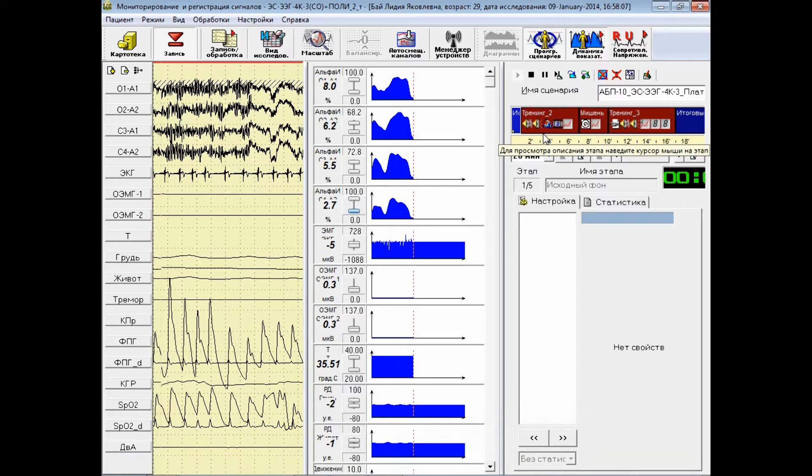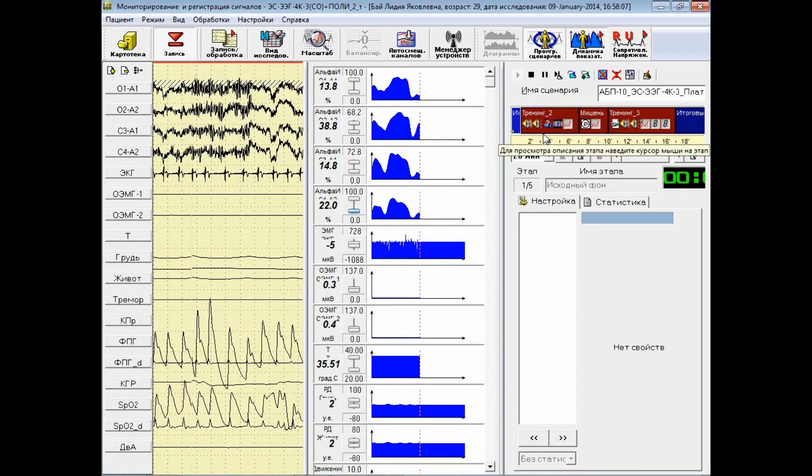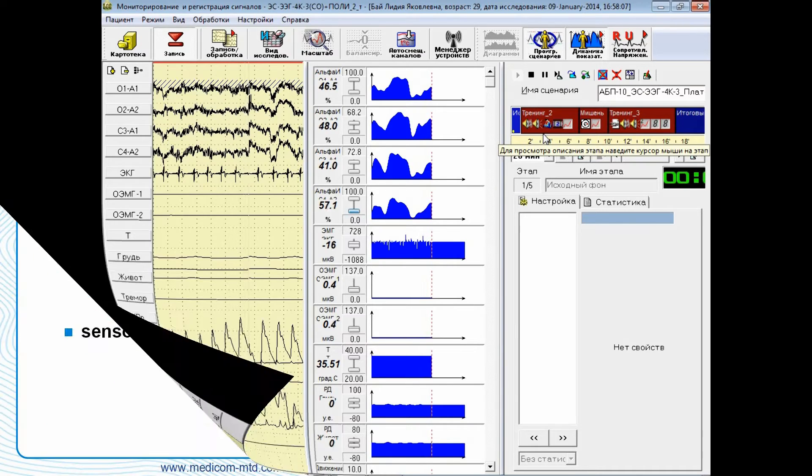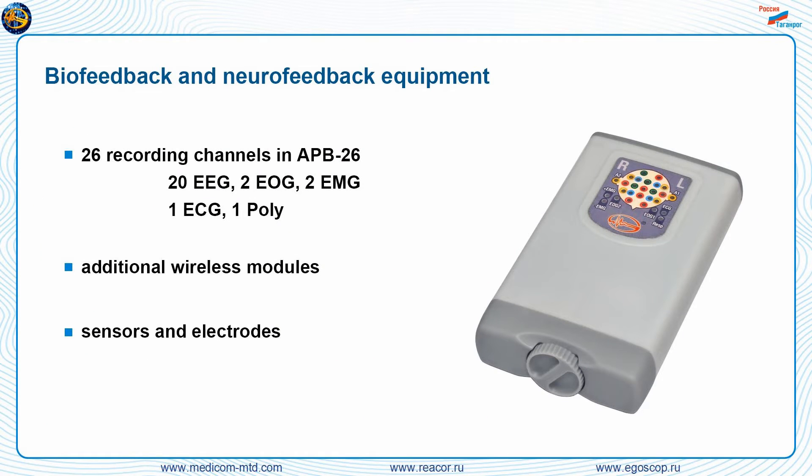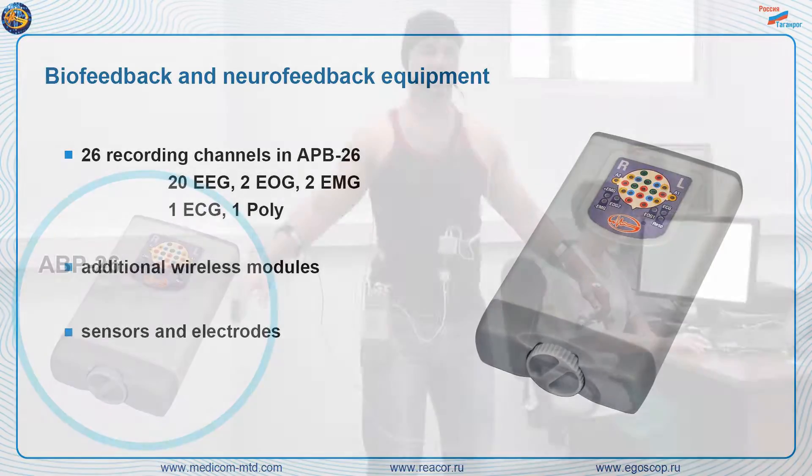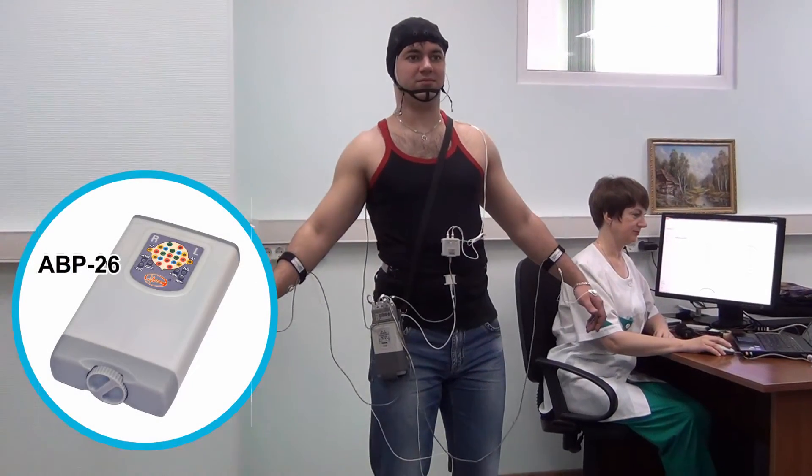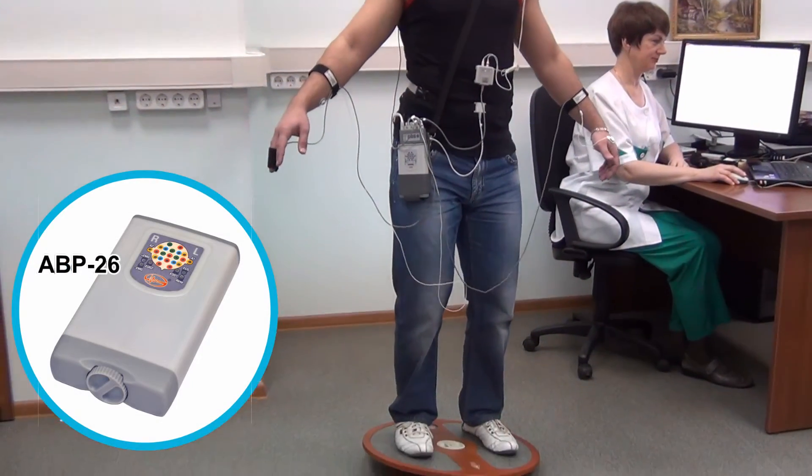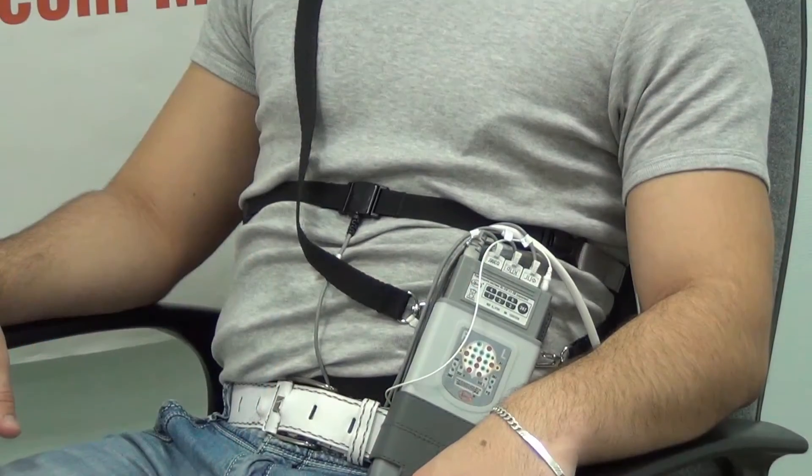Professional neurophysiological support with the help of software EEG studies. Electroencephalograph recorder Encephalan EEGR-1926 main modification includes 26 recording channels in ABP-26.